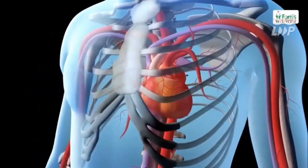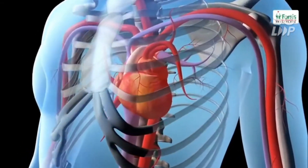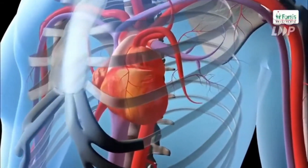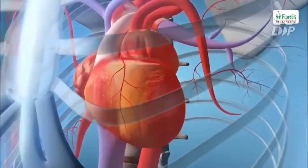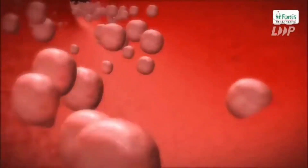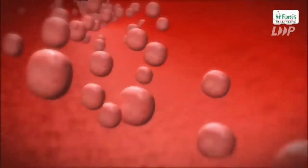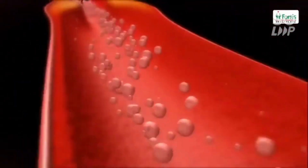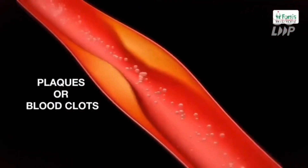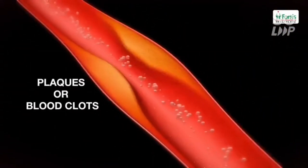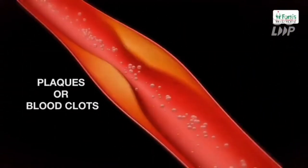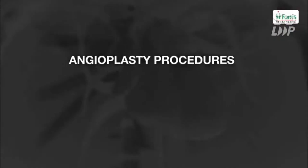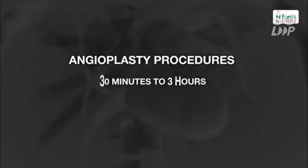The percutaneous transluminal or balloon angioplasty is a treatment procedure to restore the blood flow in the narrowed or blocked coronary arteries caused due to plaques or blood clots. Most coronary angioplasty procedures last between 30 minutes to 3 hours.